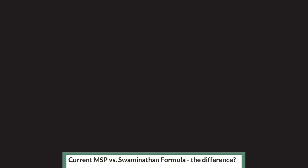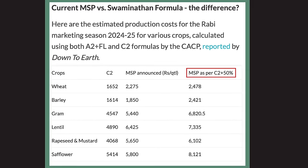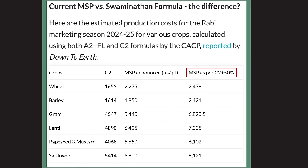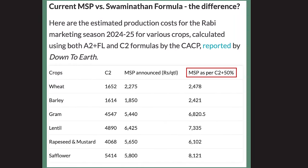Now, what exactly is the difference this one variable could make to the MSP? To put it into perspective, a chart shows how much more farmers would earn if their MSP was calculated using the C2 + 50% formula. There is a 9 to 40% difference in the C2 + 50% formula compared to the current formula. So long story short, the farmers can earn a lot more if the MSP calculation is done with the C2 + 50% formula, which is the reason why the farmers are demanding this formula be used.